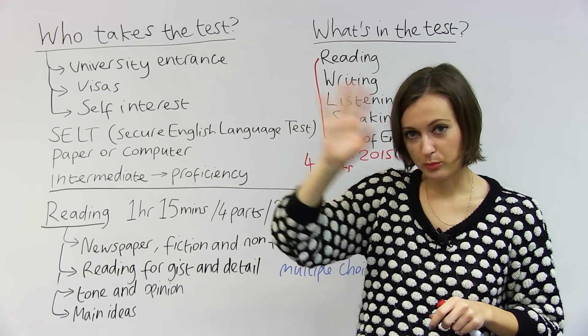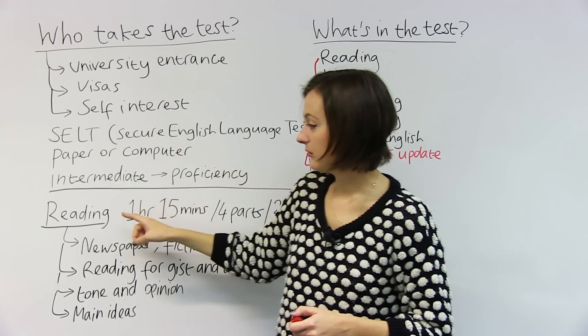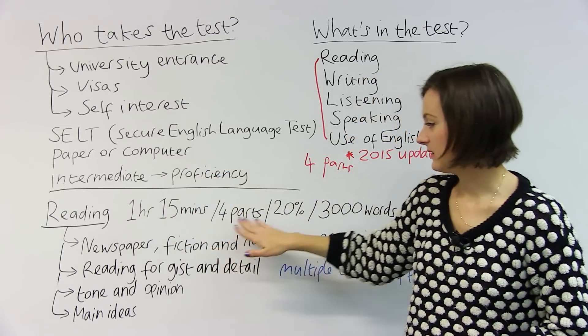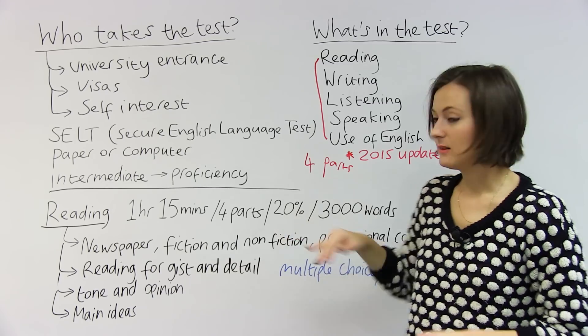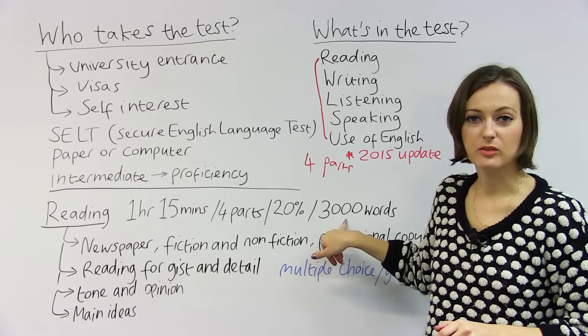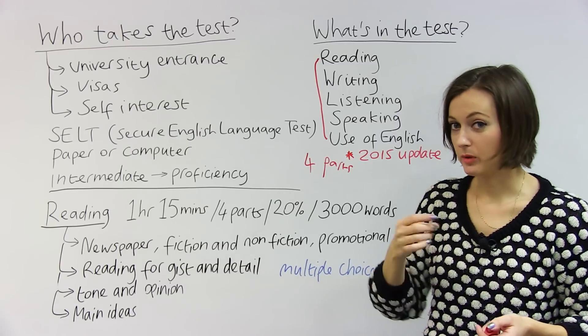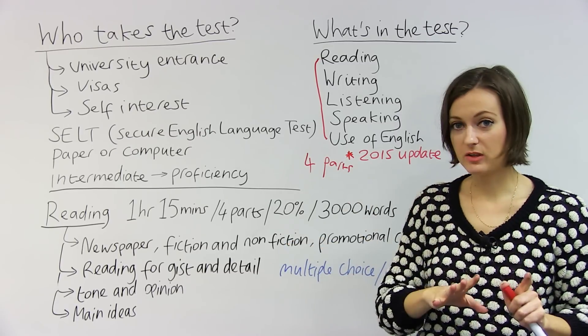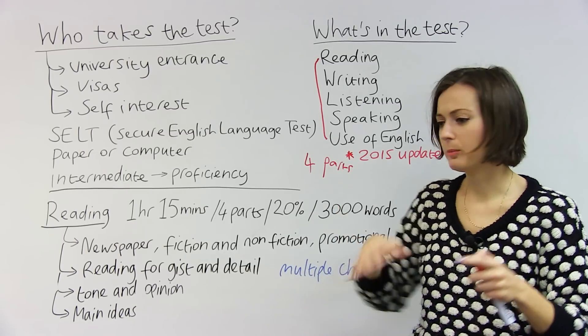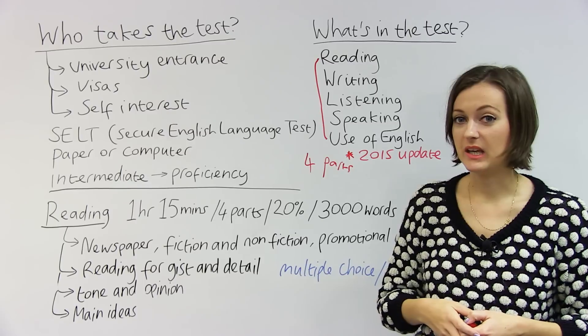So that's a broad survey of what's in the test. Now we're going to look at the parts in more detail. Let's start with the reading test. The reading test is one hour and 15 minutes. There are four parts. This will be 20% of your overall mark, and you'll be expected to read 3,000 words. What kinds of text will you be reading? Well, you'll be reading newspapers, fiction, nonfiction, and promotional copy. So it could be a variety of texts that you might just encounter in life in an English-speaking country.